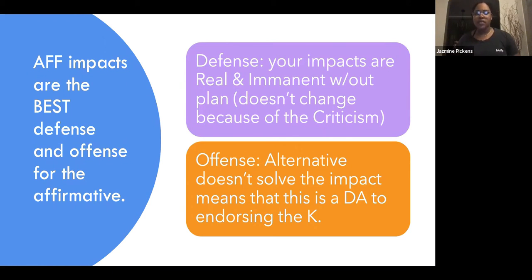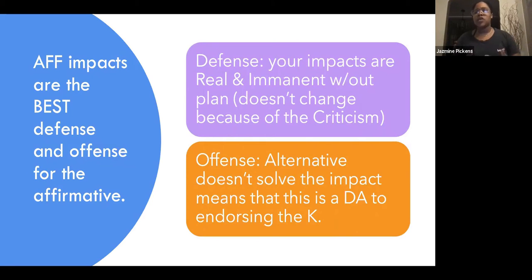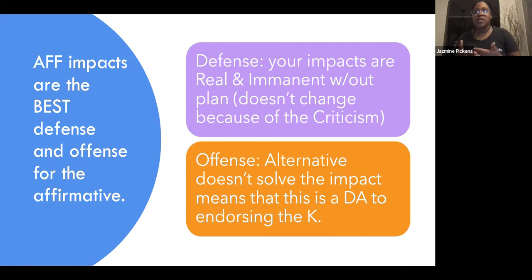The specificity of your internal link chain is going to be your biggest asset. On offense, the alternative doesn't solve the impact — this is a dissent to endorsing the critique. Absent an alternative to resolving this very real and imminent impact, it becomes either try-or-die for the affirmative, or it becomes pedagogically irresponsible to not create strategies that try to resolve that impact. This bolsters uniqueness and significance for the affirmative.